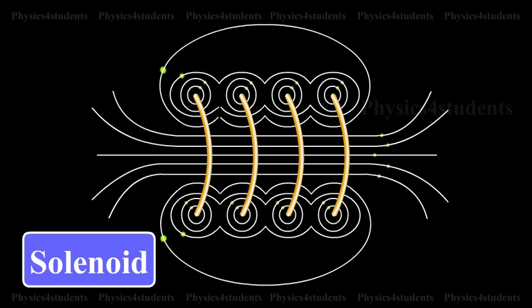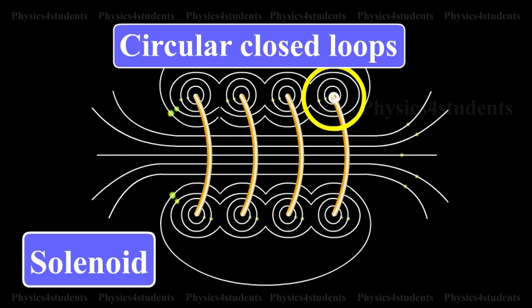The magnetic fields associated with each single turn are almost concentric circles and hence tend to cancel between the turns. The direction of the magnetic field due to circular closed loops, i.e. solenoid, is given by right-hand palm rule.